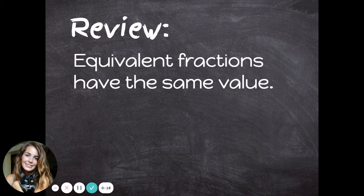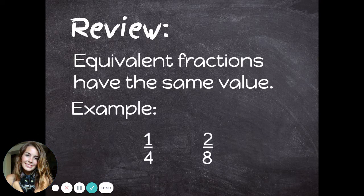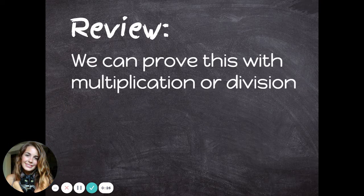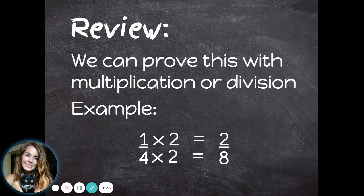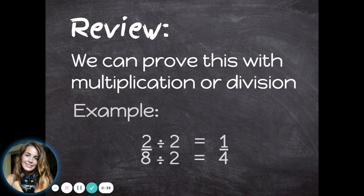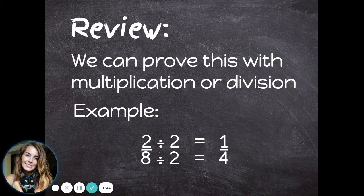Review. Equivalent fractions have the same value. For example, one-fourth is equivalent to two-eighths. We can prove this with multiplication or division. We can multiply the numerator and denominator in one-fourth both by two to get to two-eighths. Or we could go the other way — we could divide the numerator and denominator in two-eighths by two to get to one-fourth.